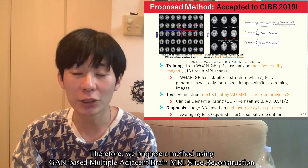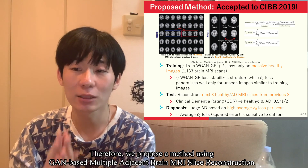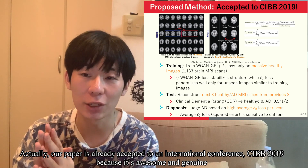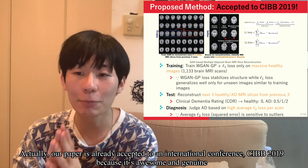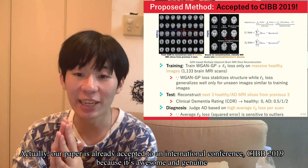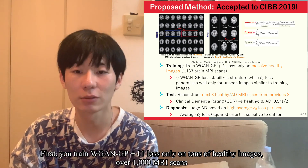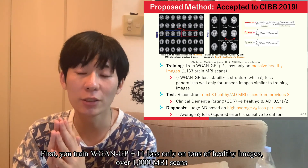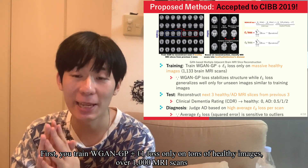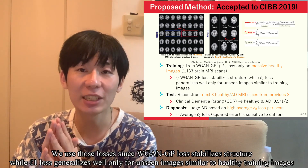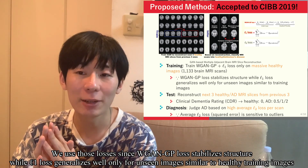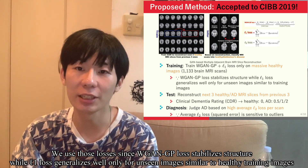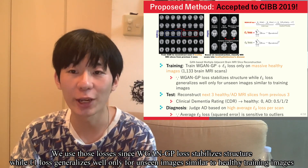Therefore, we propose a method using GAN-based multiple adjacent brain MRI slice reconstruction. Our paper is already accepted to the international conference CIBB 2019. First, you train a double-GAN with WGAN-GP plus L1 loss only on over 1000 healthy MRI scans. We use these losses since WGAN-GP loss stabilizes structure, while L1 loss generalizes well for unseen images similar to healthy training images.